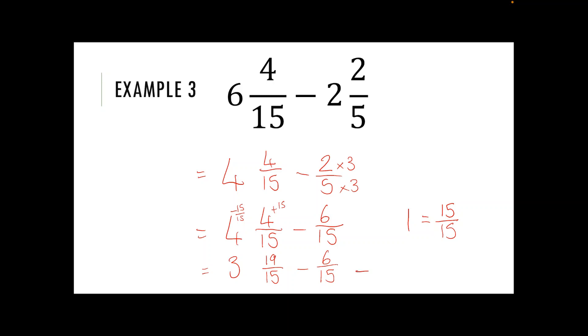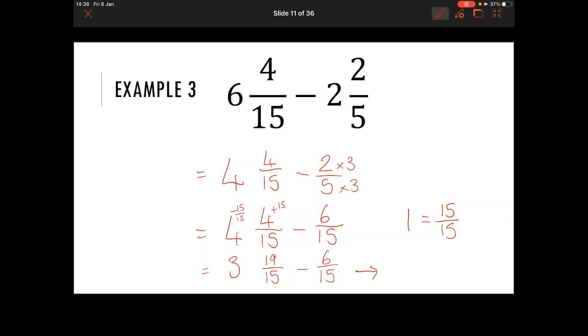I've run out of space so I'm just going to move along to the side. So my 19 take away six is going to leave me with 13, so I've got three and 13 fifteenths which I cannot simplify anymore.